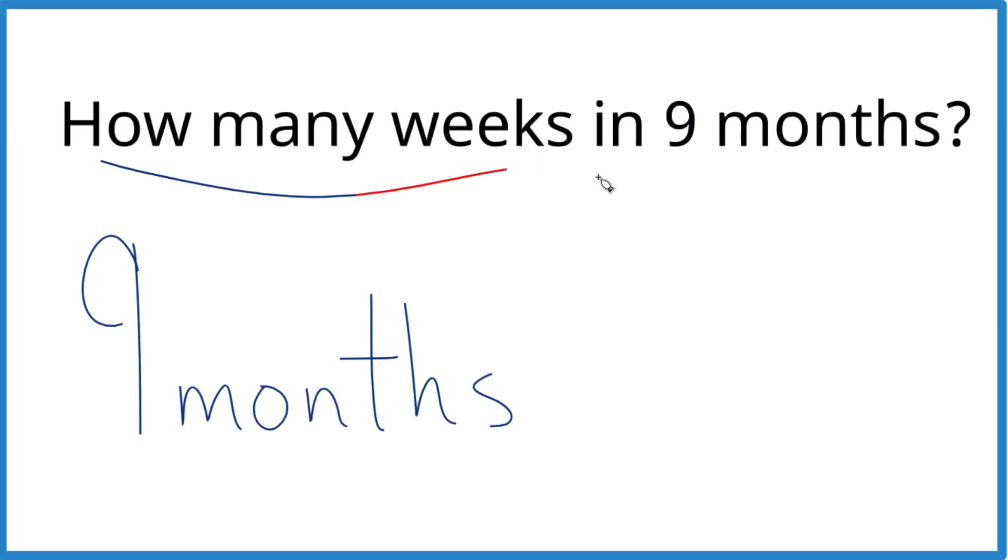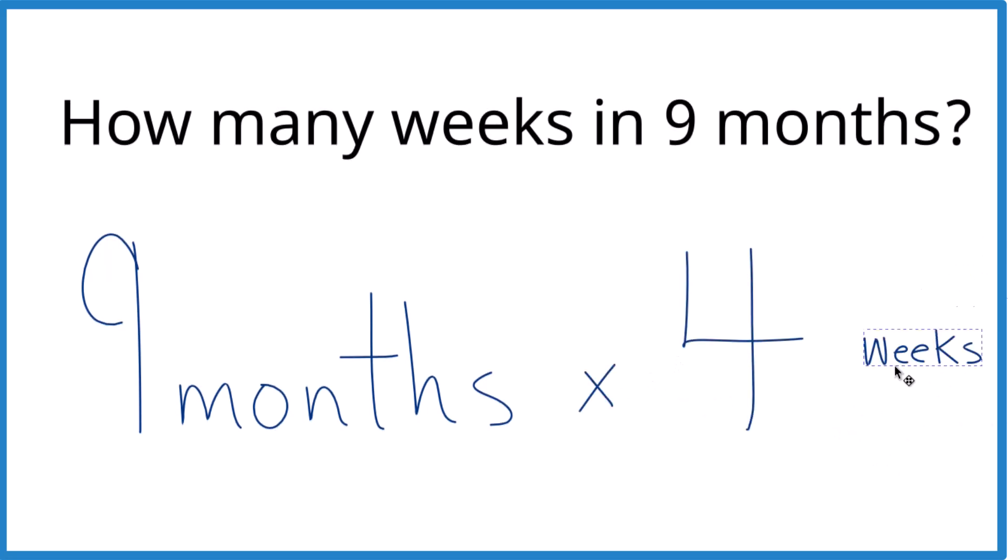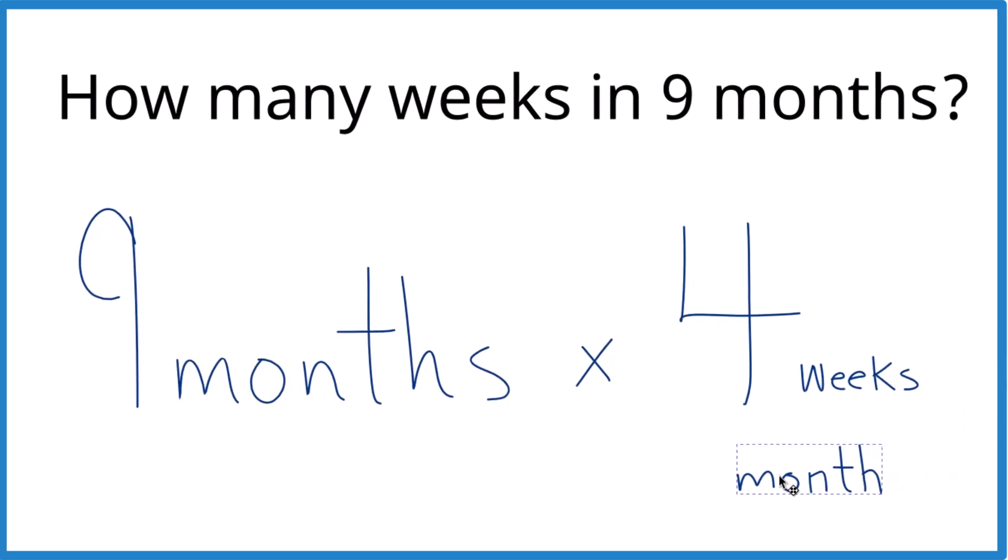Let's figure out how many weeks are in nine months. The quick way to do it is you take nine months. We'll assume each month is four weeks. So you take nine times four, and that's four weeks per month.